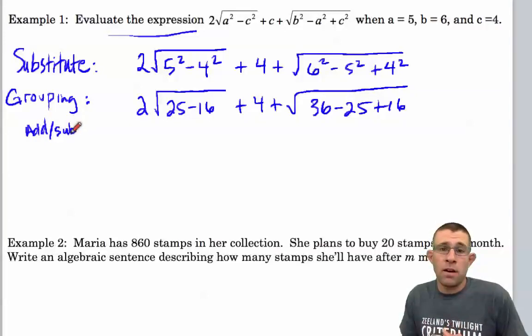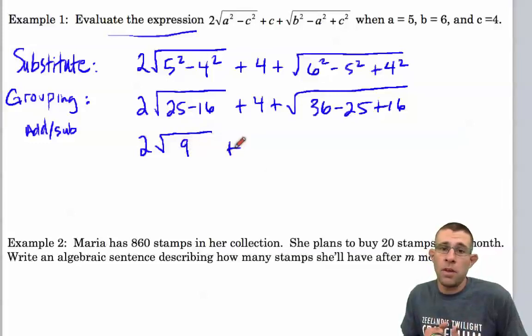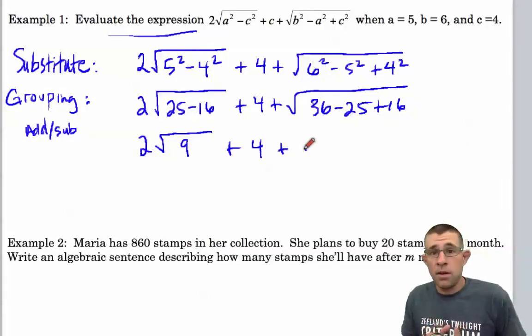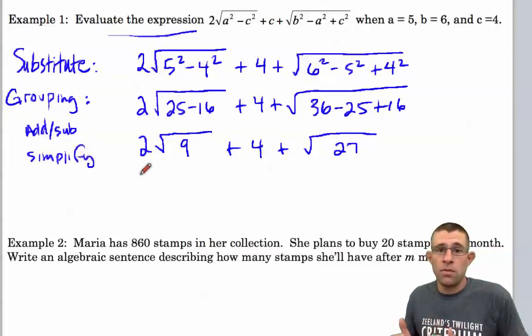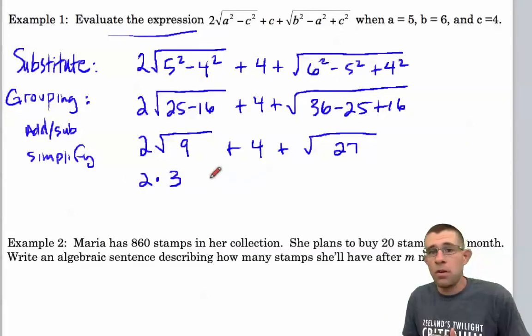Now let's simplify our addition and subtraction operation inside those grouping symbols. So we'll end up with 2 times the square root of 9 plus 4 plus the square root of 27. Now we're going to simplify those operations of the square root. So we have 2 times 3 plus 4 plus 5.19.